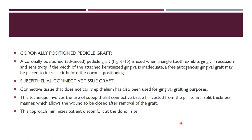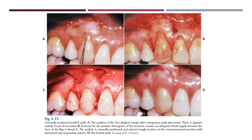Coronally positioned pedicle graft is used when a single tooth exhibits gingival recession and sensitivity. Sub-epithelial connective tissue graft: connective tissue that does not carry epithelium has also been used for gingival grafting procedures. In this procedure, approximately 4 mm recession is still present, an incision is given for the pedicle, divergence is maintained, the pedicle is positioned and sutured in place at the CEJ, and then healing of the graft takes place.